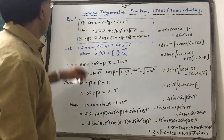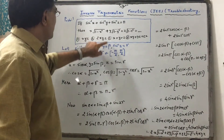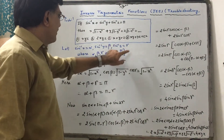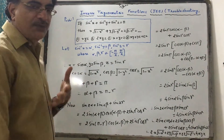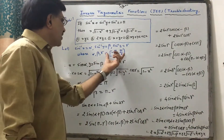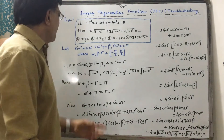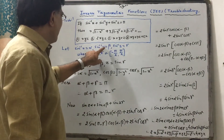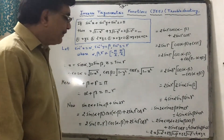First of all, let sin⁻¹x = α, sin⁻¹y = β, sin⁻¹z = γ, where α, β, γ belong to the range of sin⁻¹, that is the closed interval [−π/2, π/2]. From that we can say x = sinα, y = sinβ, z = sinγ.